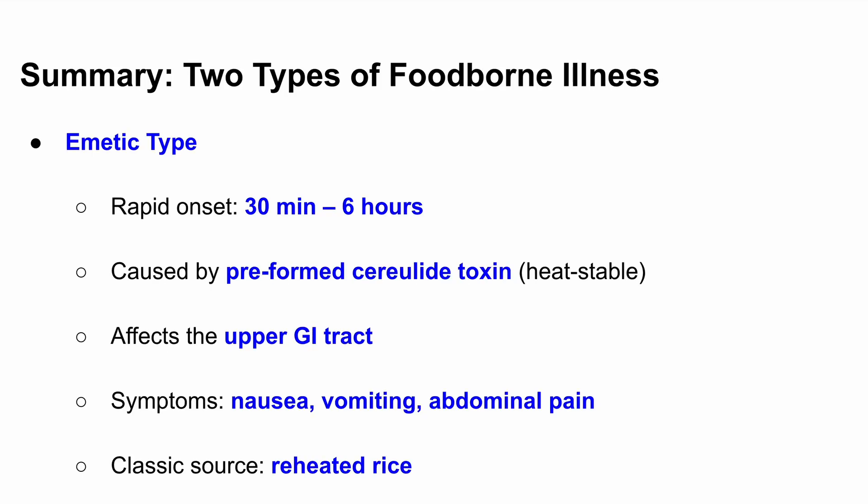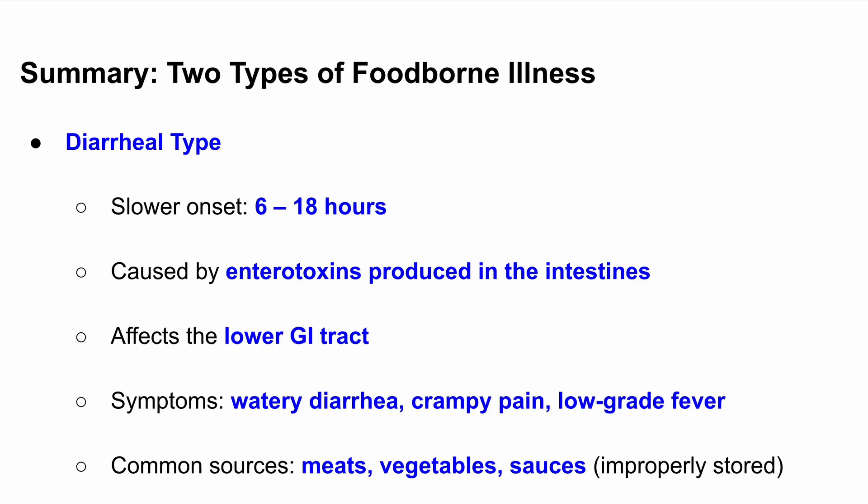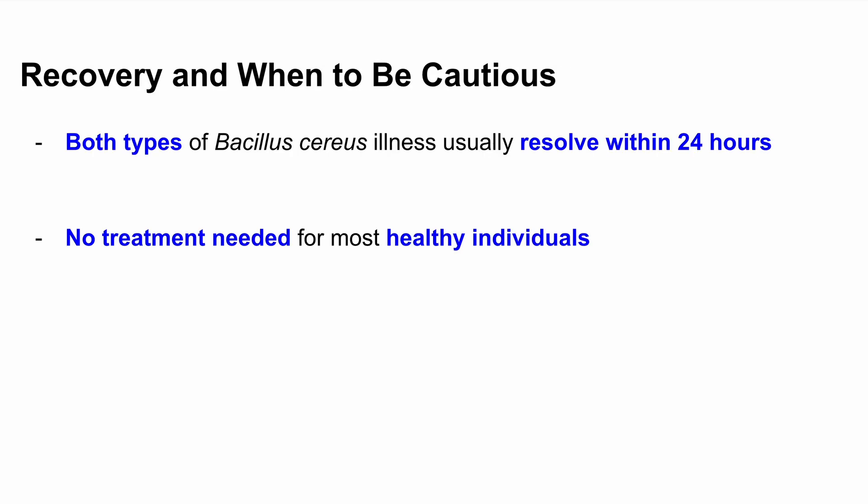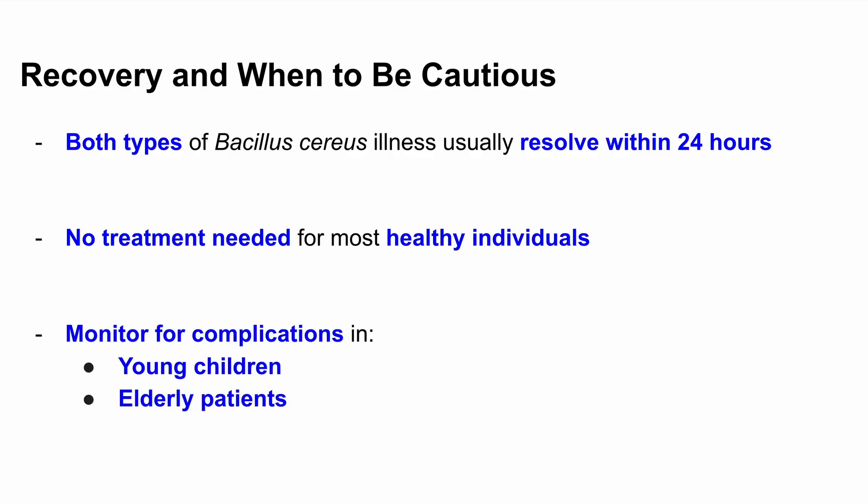Let's wrap up with high-yield exam tips. Remember the two types: the emetic type is rapid onset, affects the upper GI tract, and is caused by preformed heat-stable cerelide toxin. Symptoms begin within 30 minutes to 6 hours and include nausea, vomiting, and abdominal pain — think reheated rice as the classic trigger. The diarrheal type is slower to appear, affects the lower GI tract, and is caused by enterotoxins produced inside the gut. Symptoms show up 6 to 18 hours later and include watery non-bloody diarrhea, crampy abdominal pain, and sometimes low-grade fever, more commonly associated with improperly stored meats, vegetables, and sauces. Both types usually resolve within 24 hours and don't require treatment in healthy individuals, but stay alert for complications in vulnerable populations like children, elderly patients, or the immunocompromised.